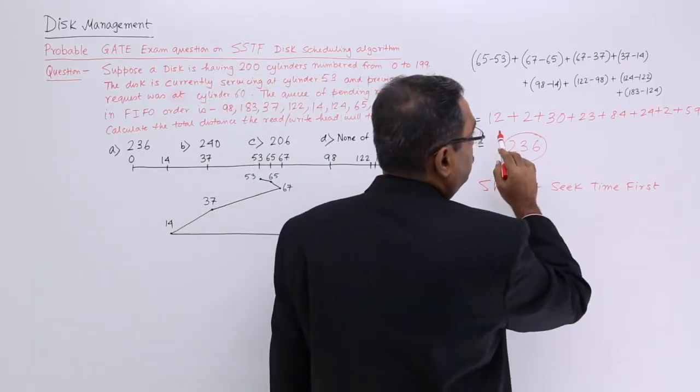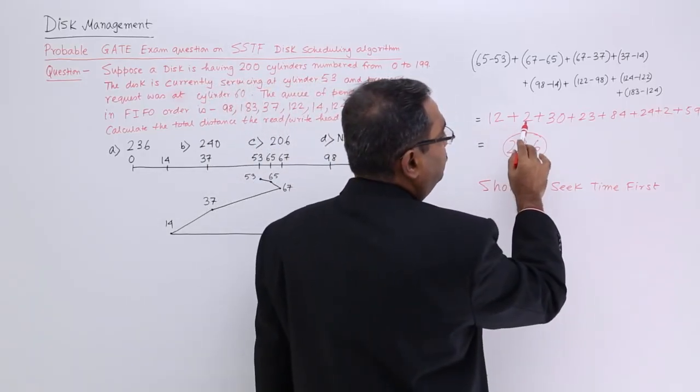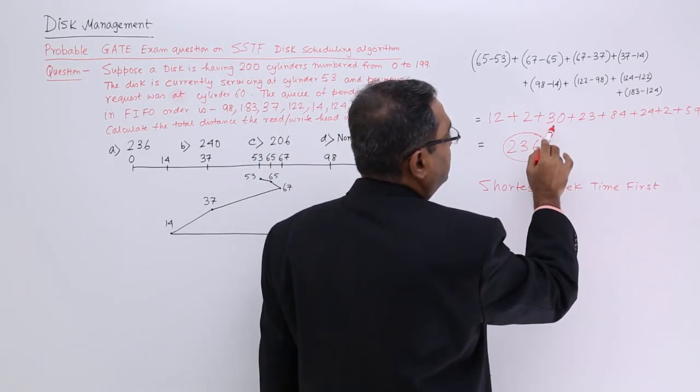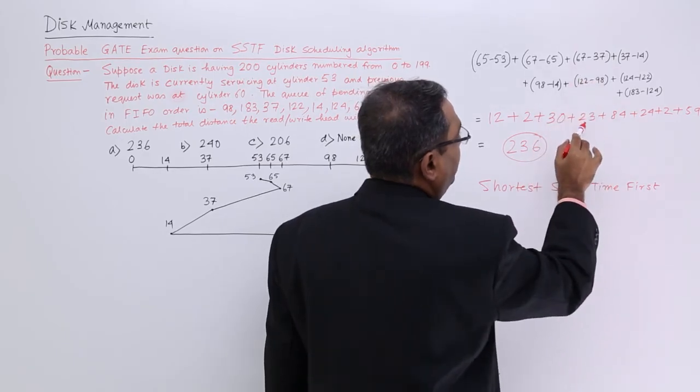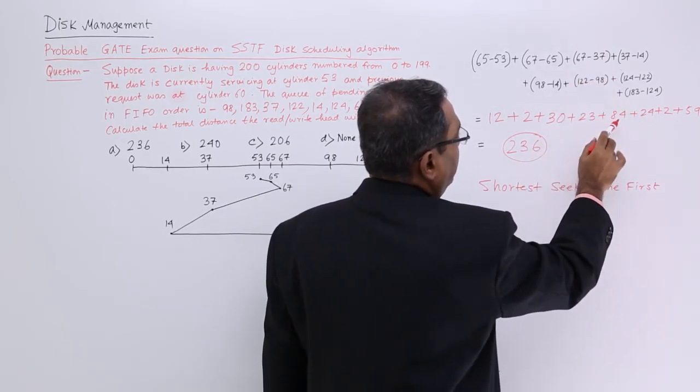That will be 236. Let me check once. 12, 2, then 30, and then 23 will be this one, then 84.